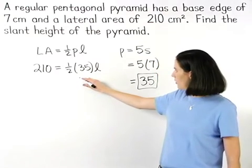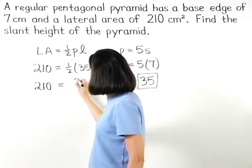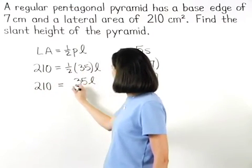Simplifying on the right side we have 210 equals 35L over 2.